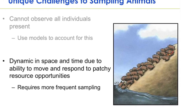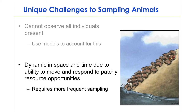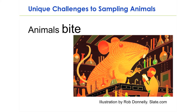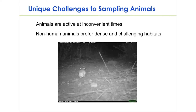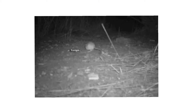In addition, animals move, as very nicely demonstrated by the lemmings here. This results in populations that are dynamic in space and time, likely responding to patchy resource opportunities, and generally requires more frequent sampling to capture these dynamics. Also, animals bite — fortunately not very hard, the ones we're working with. Animals are also active at inconvenient times, which means you will have to sample at inconvenient times. And they tend to prefer dense and challenging habitats wherever they're available, unlike us.